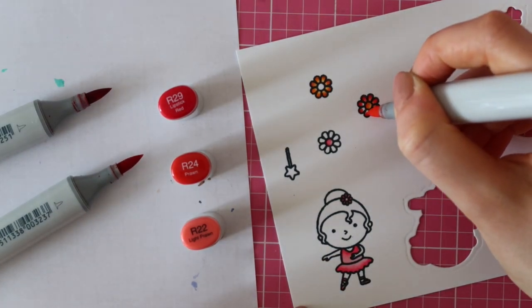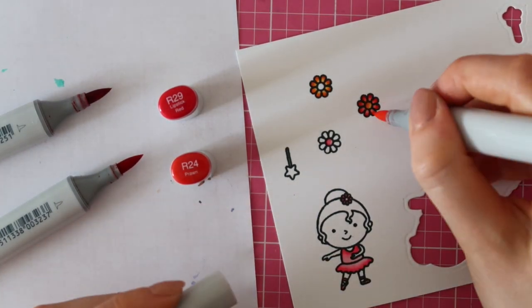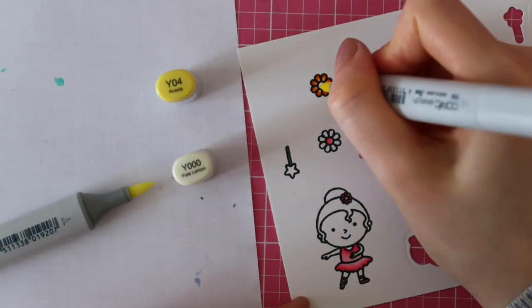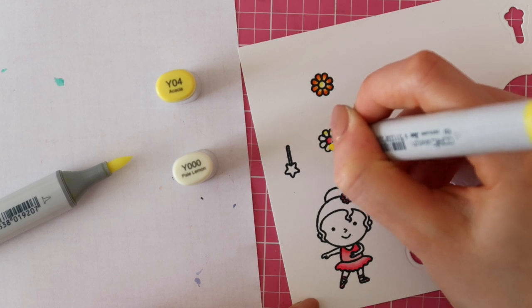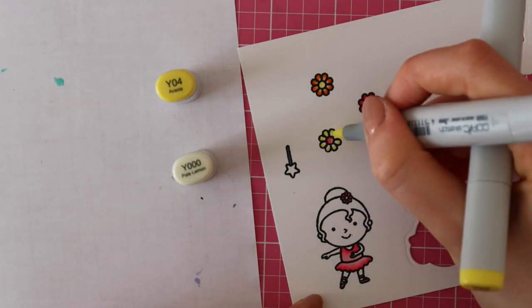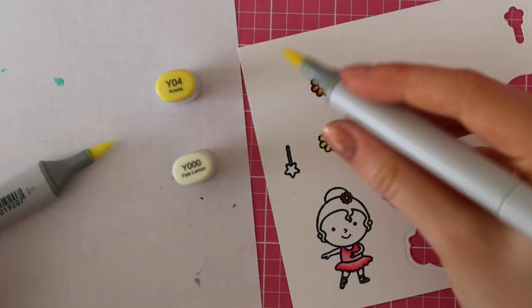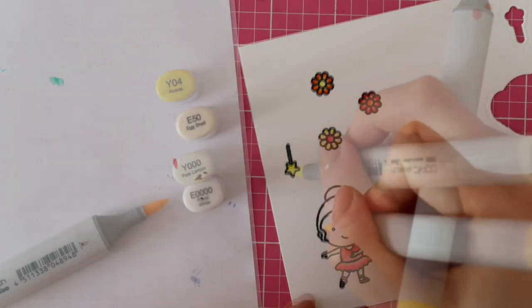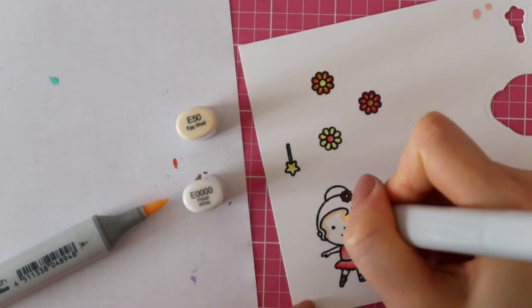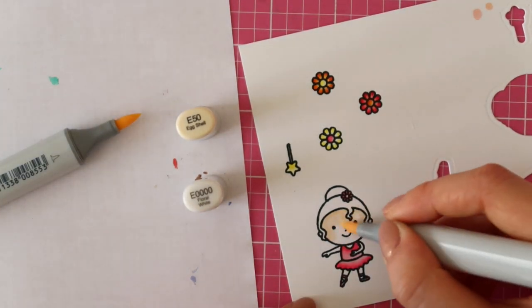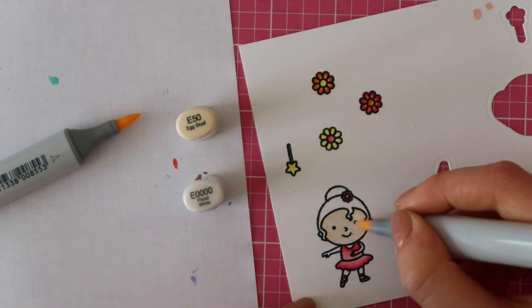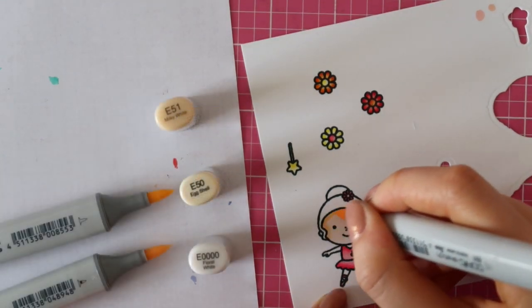These images are really tiny so you could definitely also use just two shades of each color. So as you can see, I'm using R29, R24 and R22. For the yellow flowers, I am just using two colors. In this case, I'm using Y04 and Y000. I used the same markers to color the star from the girl's magic wand and then for her skin, I used E50 and E0000.